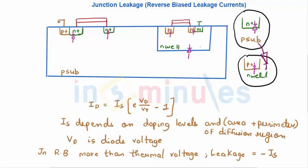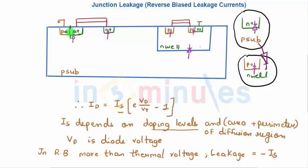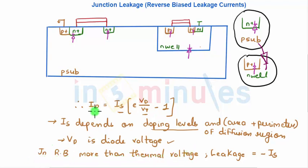We know that a reverse bias diode will conduct a small amount of current when the transistor is off. That current is given by: I_D = I_S × (e^(V_D / V_T) − 1), where I_S depends on the doping levels, area, and parameters of the diffusion region; V_D is the diode voltage; and V_T is the thermal voltage — 26 millivolts at room temperature. When the junction is reverse biased beyond the thermal voltage, the leakage current equals approximately I_S.